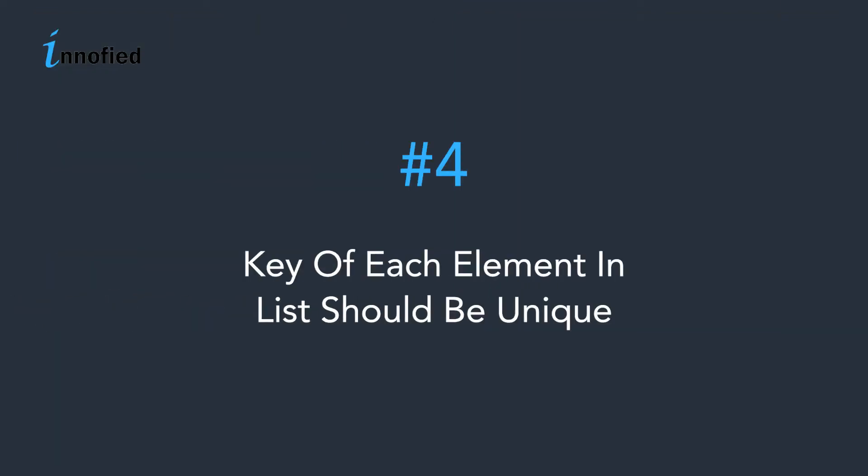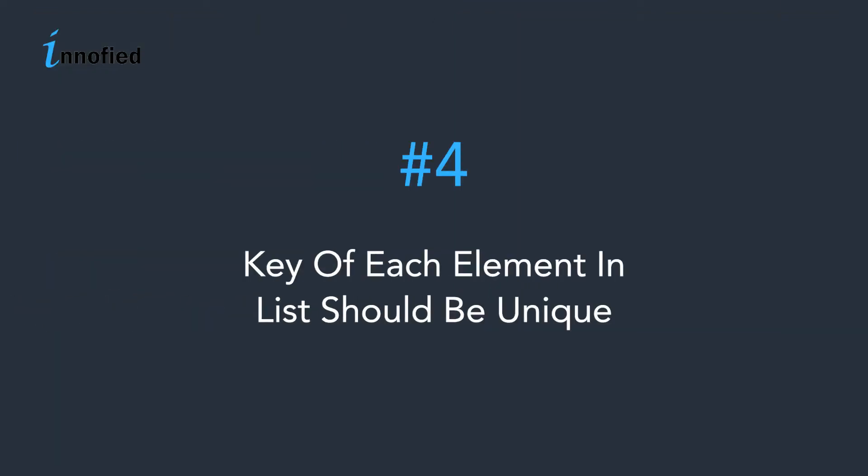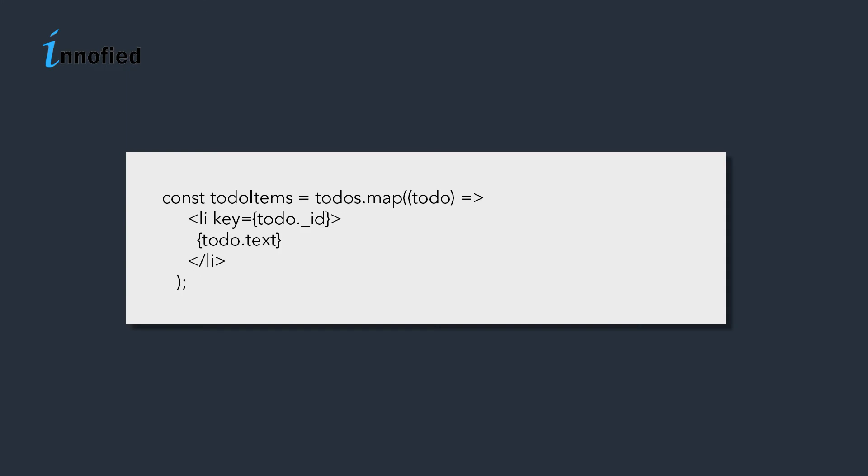Point number four, key of each element in the list should be unique. In React, unique keys help identify which items have been changed, are added or are removed. The best way to choose a key is to use a string that identifies a list item among its siblings uniquely. We recommend to use IDs from your list items as keys.